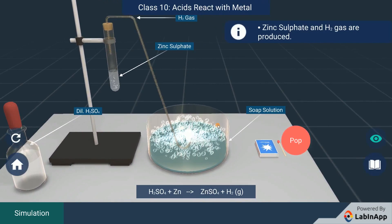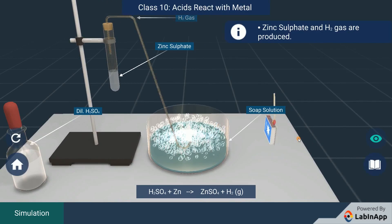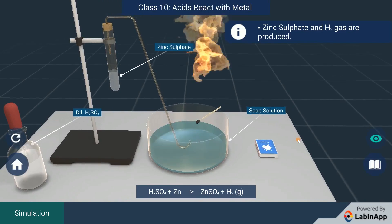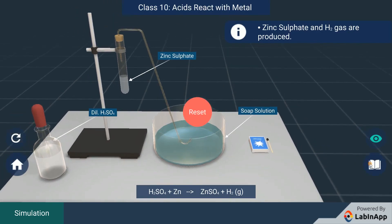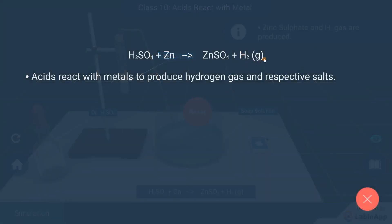Bring a burning matchstick near the surface of the soap solution. You can observe the burning of hydrogen gas with a pop sound. This indicates the presence of hydrogen gas in the bubbles.